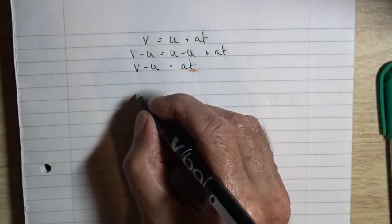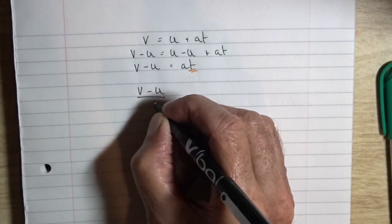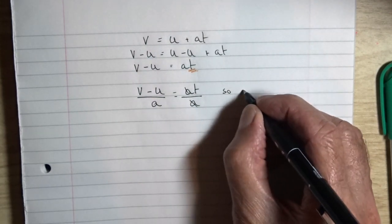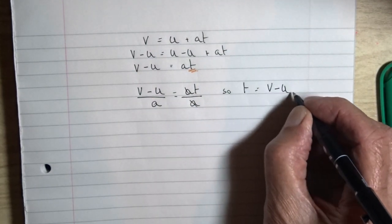But then supposing we want the t by itself, well we have to then divide both sides of the equation by a. So we've got a cancelling out on the right hand side, leaving us with t equals v minus u over a.